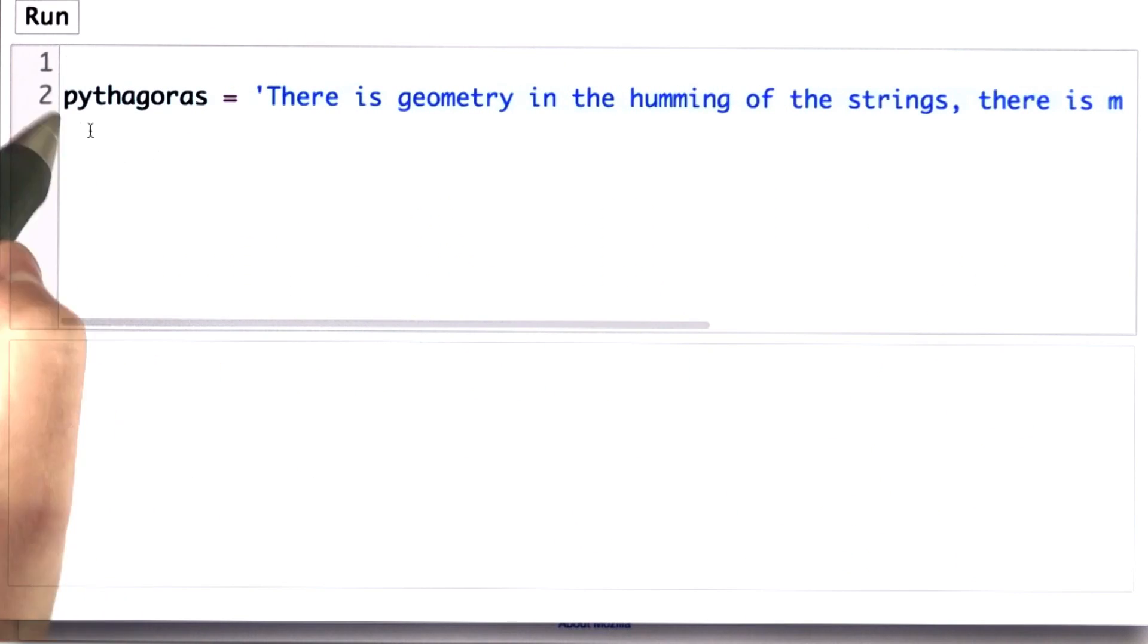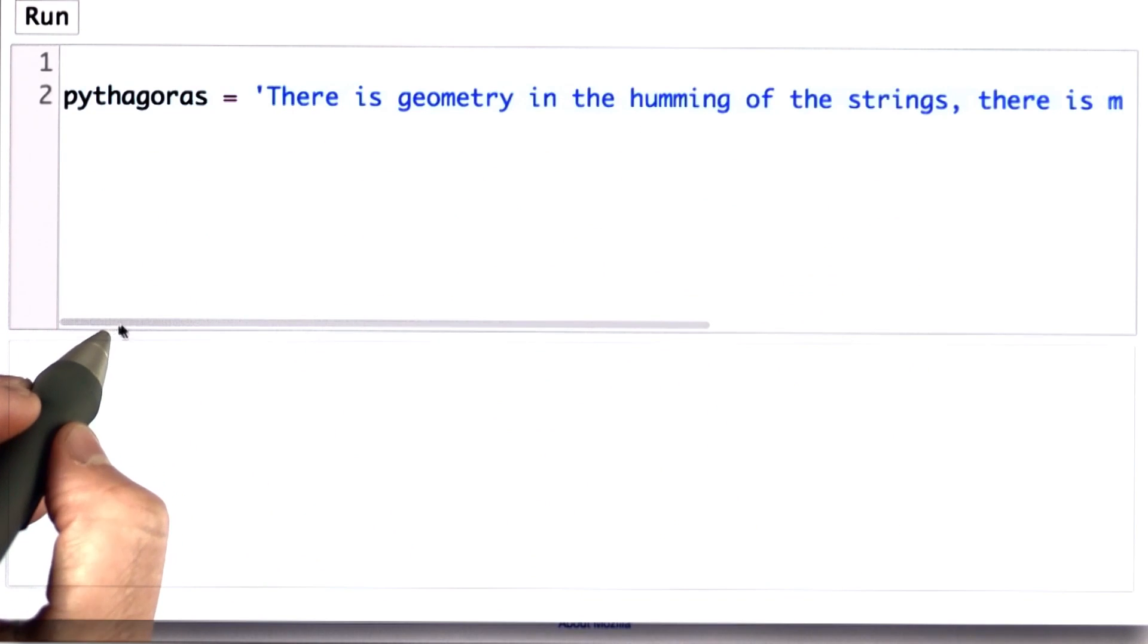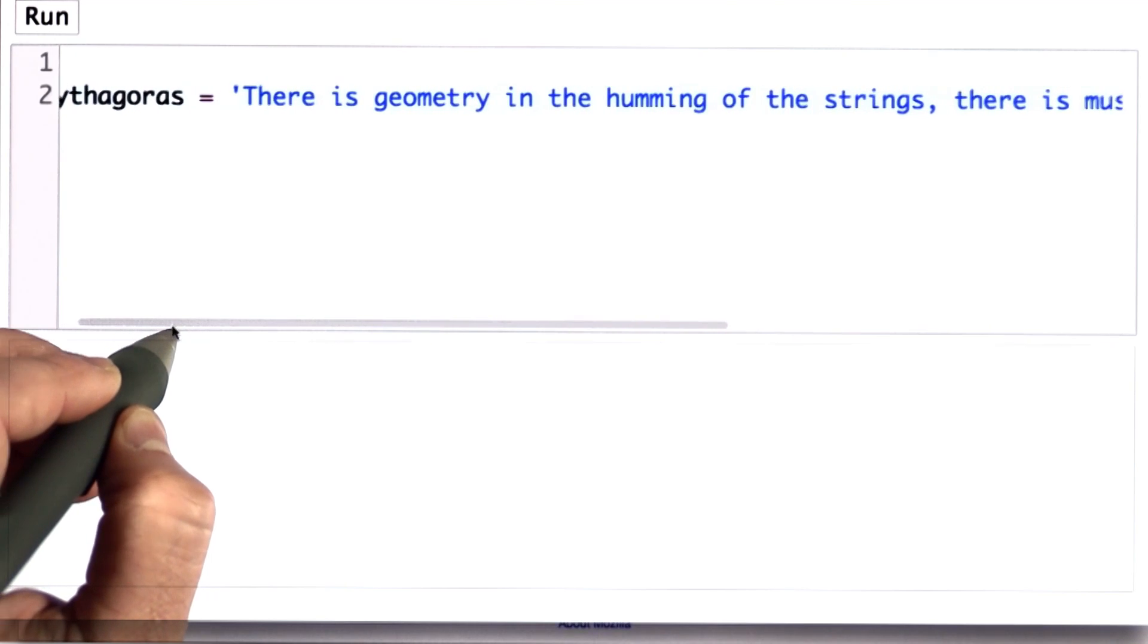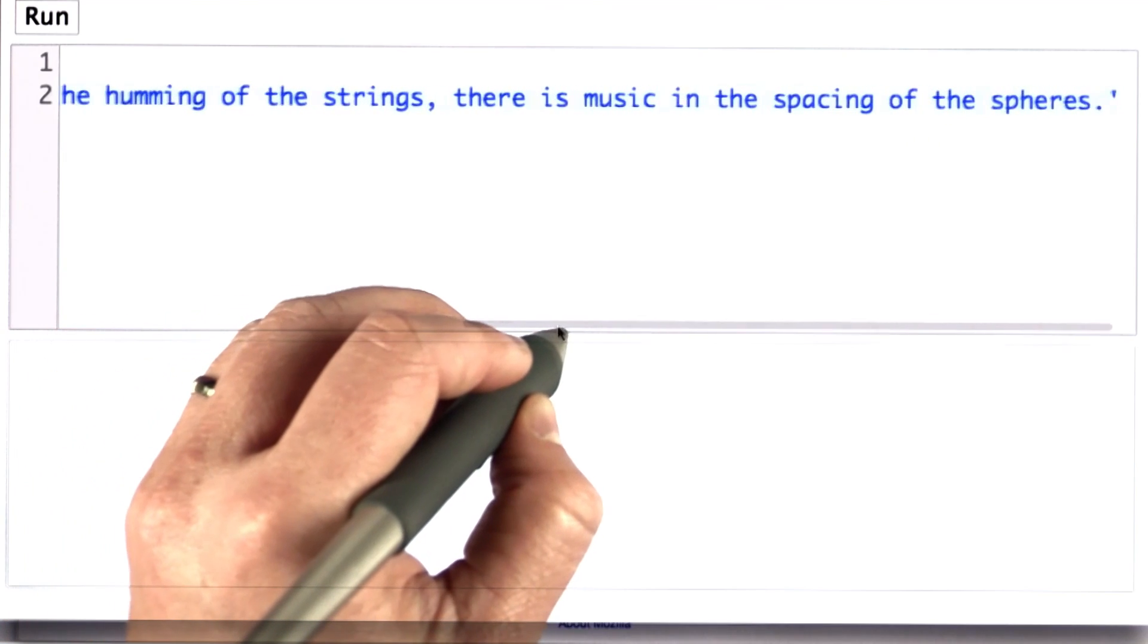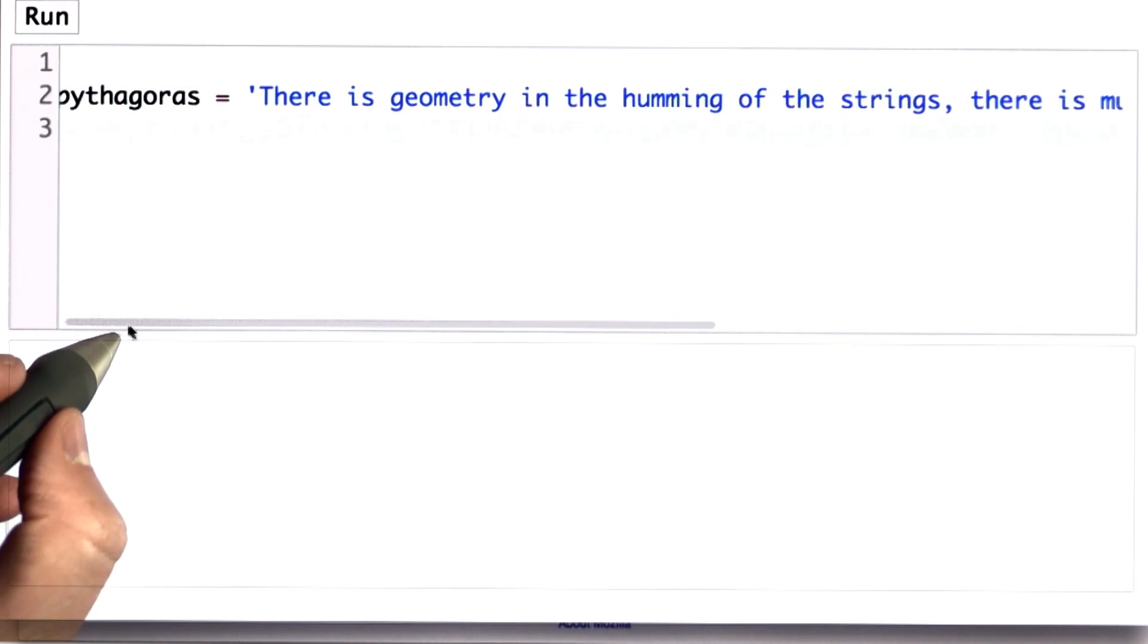Here, I've initialized the variable Pythagoras to hold the string here that's been attributed to Pythagoras. We don't know if he really said it. But it says there's a geometry in the humming of strings. There is music in the spacing of spheres.